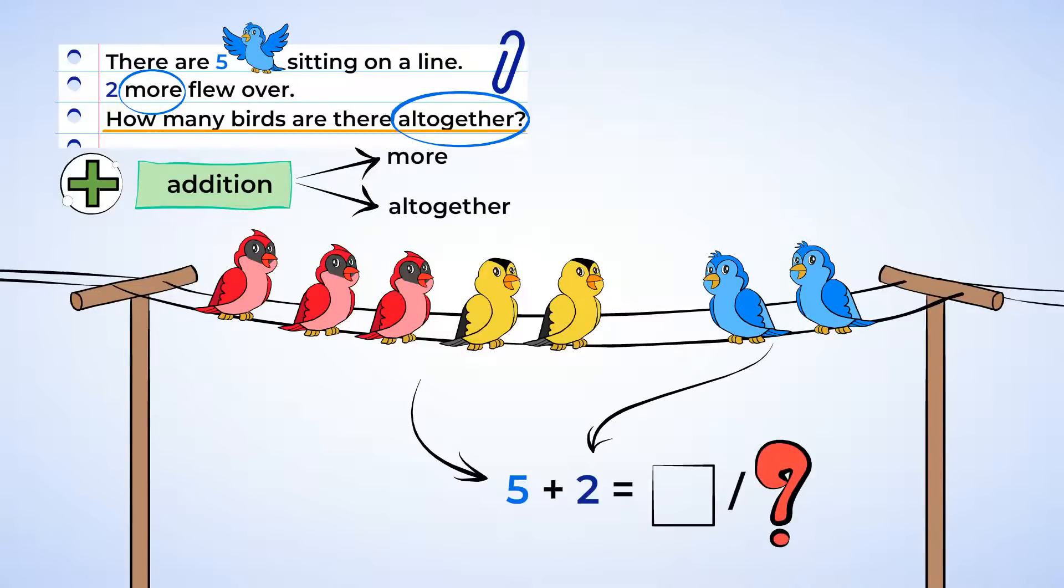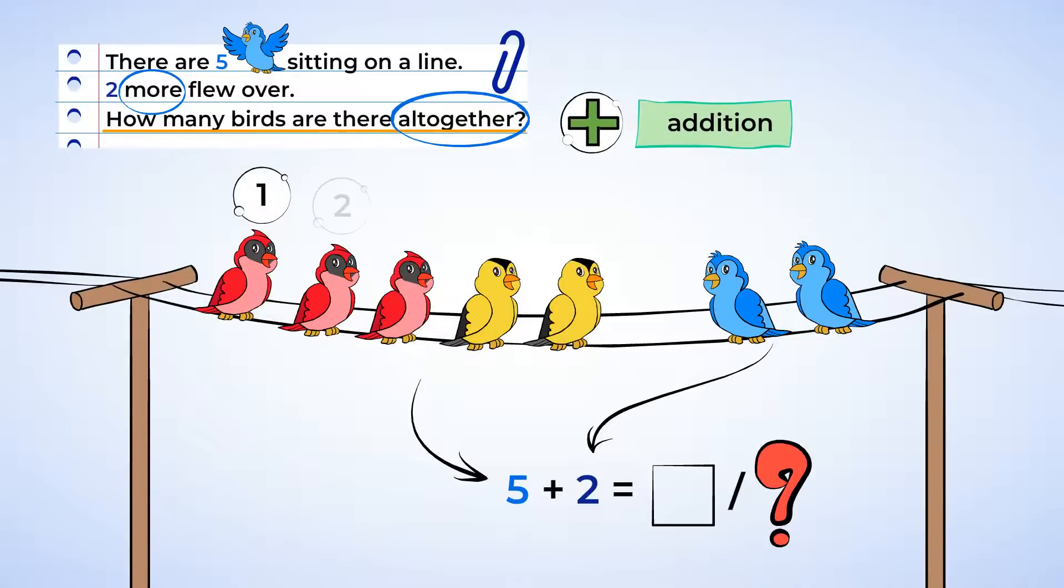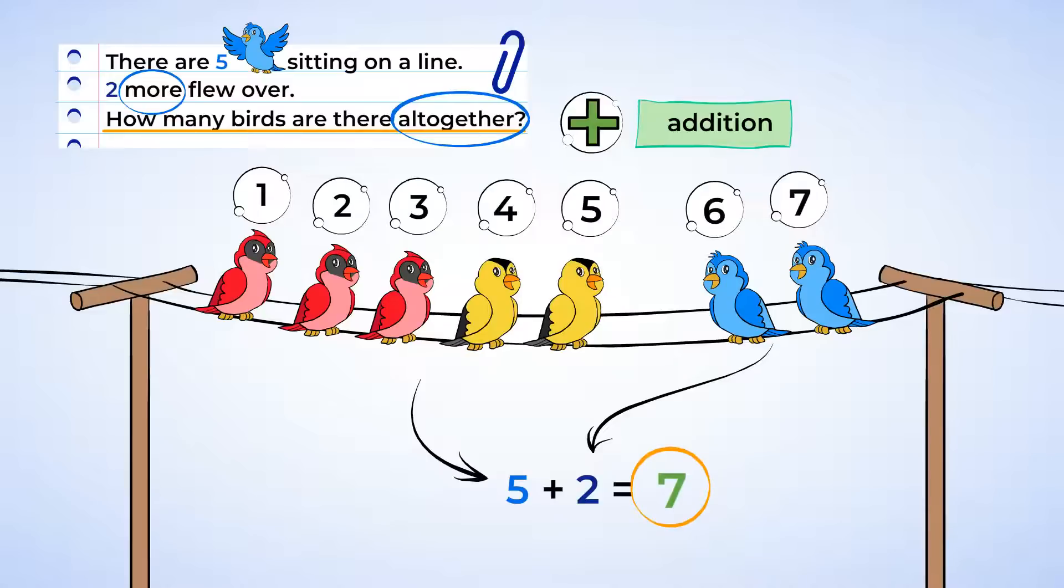And now comes the fun part. Let's add. Now we already drew a picture of all the birds, so we can count them. One, two, three, four, five, six, seven. Five plus two equals seven. There are seven birds on the line all together.